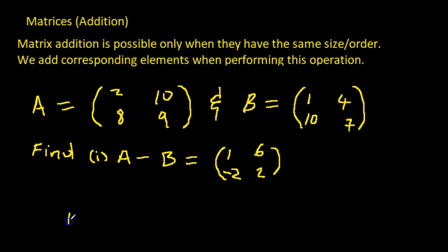What if I ask you to find something like this now? A plus, sorry, 2A plus 3B. What's 2A? So 2A means 2 times all elements in A. So 2A would be 4, 2 times 10 is 20, 2 times 8 is 16, 2 times 9 is 18. So it's pretty much same like as a bracket expansion, you multiply each element in the bracket by 2.